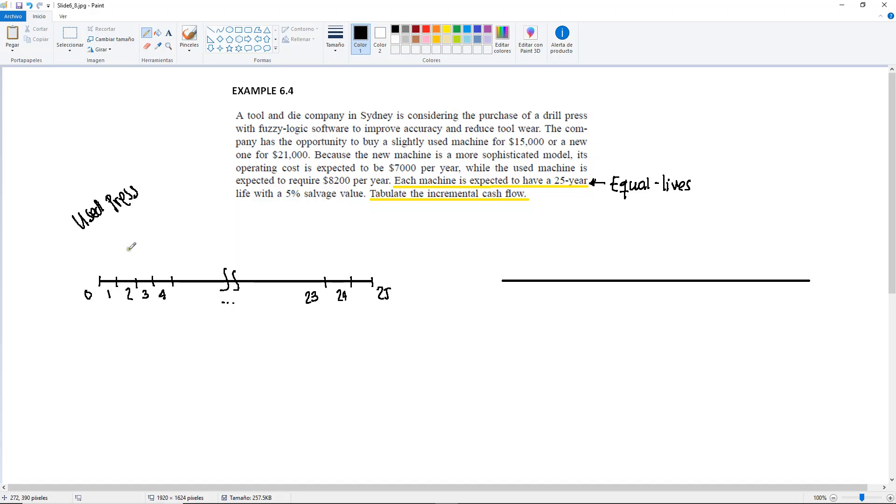In year 0, this is the used machine, I'm going to buy it for $15,000. That's my P. Then it says that for the used one, it's expected to require $8,200 per year. So I'm going to have an A, years 1, 2, 3, and so forth, until year 25. My A is going to be minus $8,200.